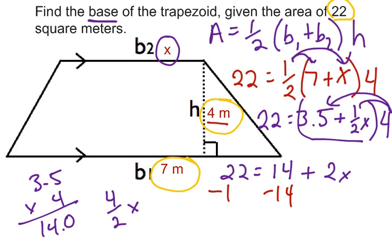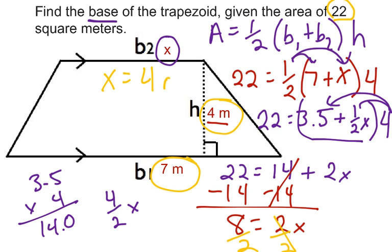Subtract 14 from both sides first. We have 8 equals 2x. You might already know 2 times what is 8, but using algebra, we can divide both sides by 2, and we get x equals 4 meters.